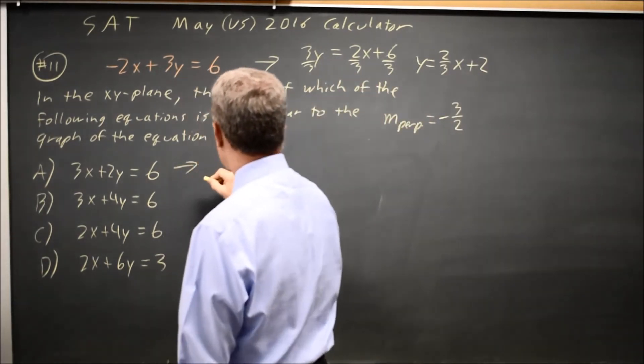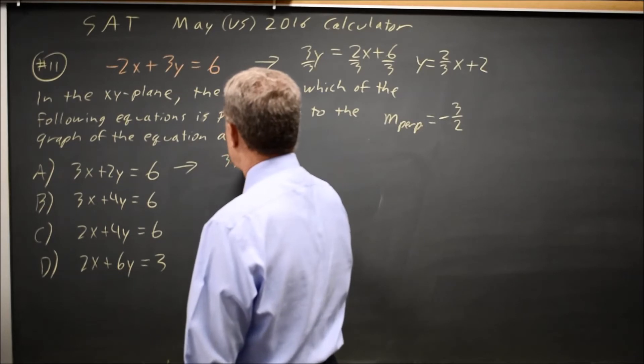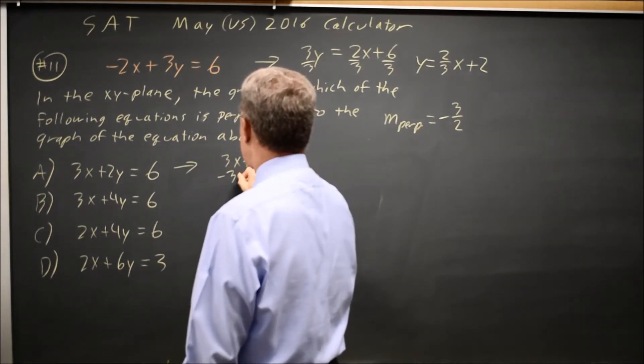Putting the first choice in slope-intercept form, 3X plus 2Y equals 6, subtract 3X.